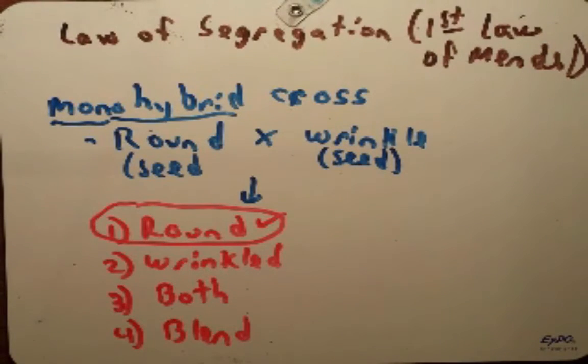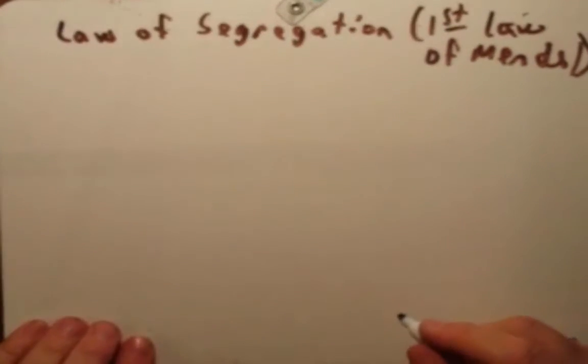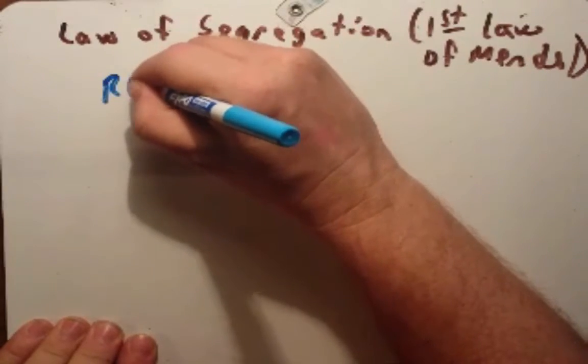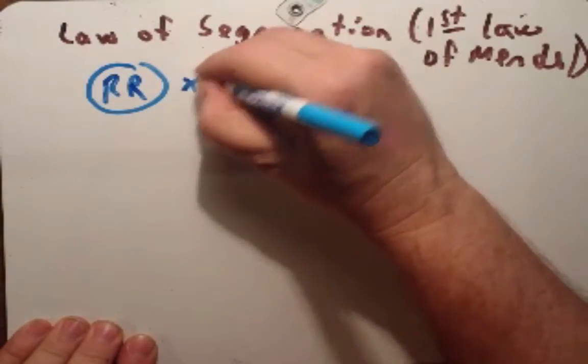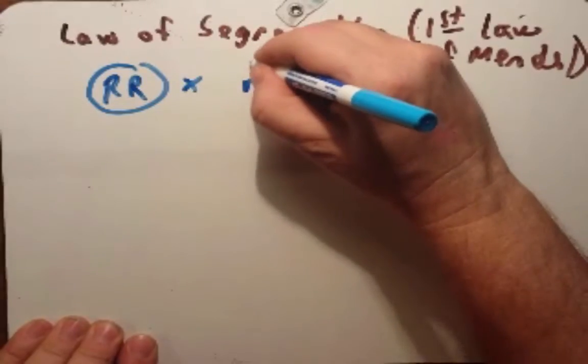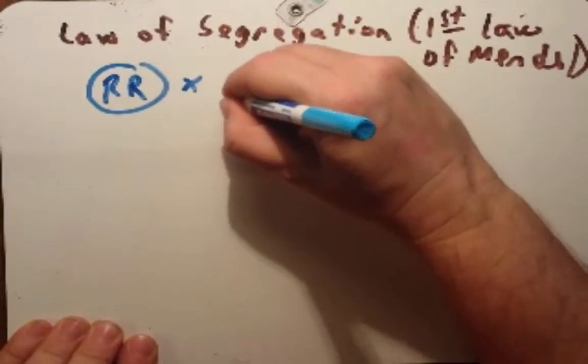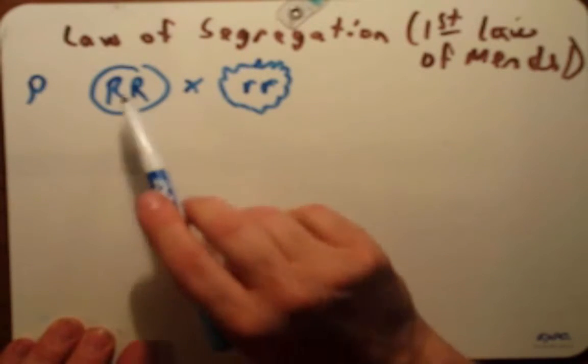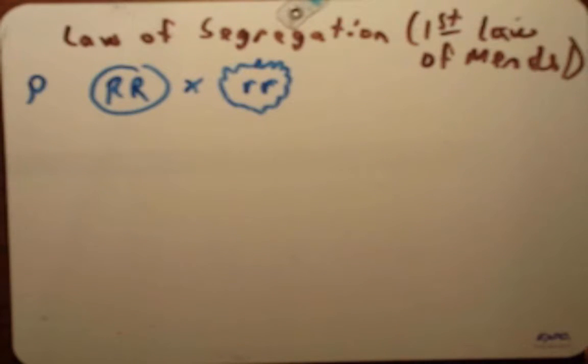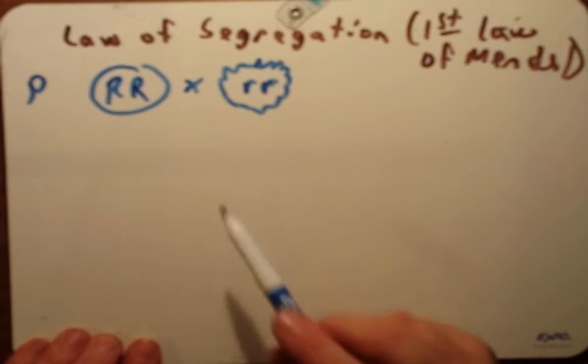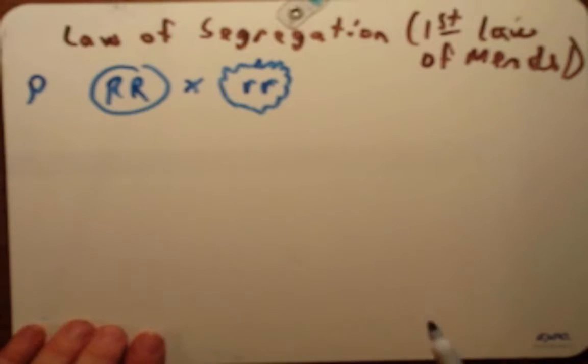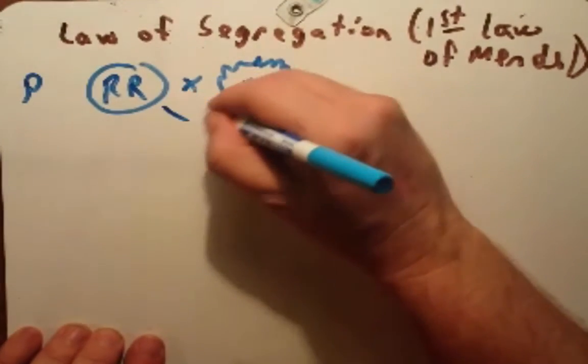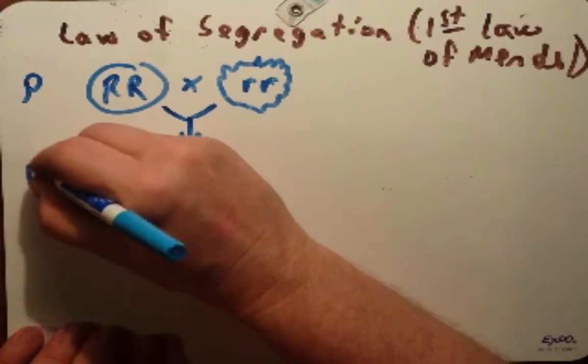What they did find was that they were round. Let's draw this cross out. He took a round seeded plant and crossed it with a rough seeded plant. We call this the P generation. At the time he did not know that there were two alleles for every gene, as we do now. He just reasoned that there was something in there that were split and passed on to the progeny.